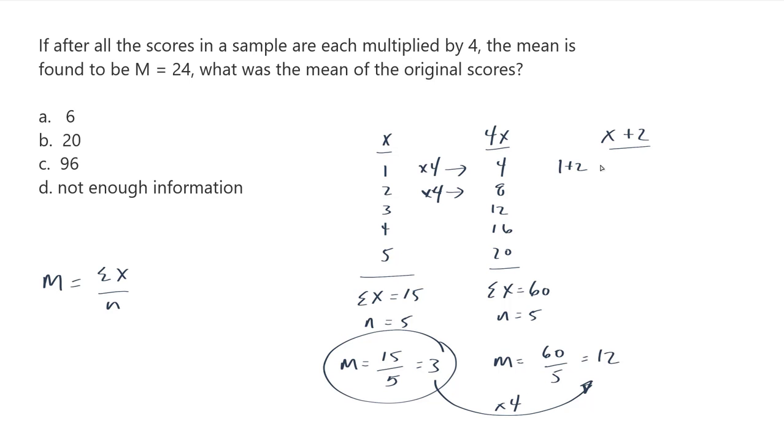So 1 plus 2 equals to 3, and so on. So 2, I'm going back to my original scores here and adding 2. So 2 plus 2 is 4. 3 plus 2 is 5. 4 plus 2 is 6. 5 plus 2 is 7.